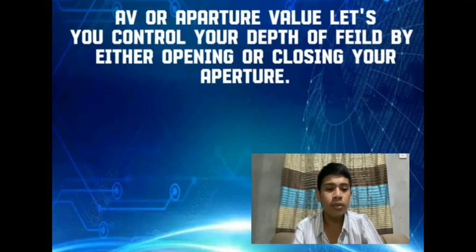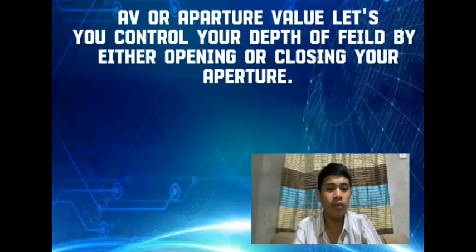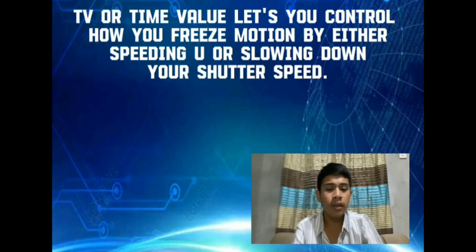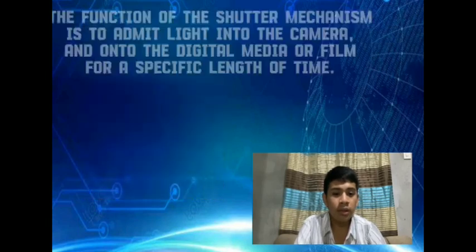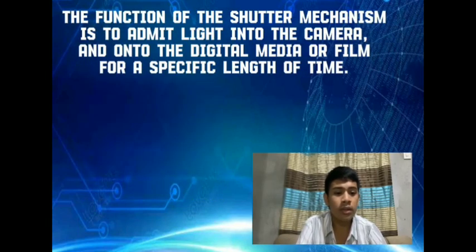AV, or aperture value, lets you control your depth of field by either opening or closing your aperture. TV, or time value, lets you control how you freeze motion by either speeding up or slowing down your shutter speed. Our next topic is shutter speed.